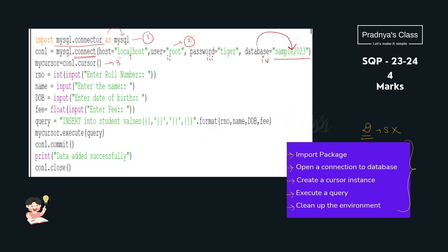Moving to the third step — we need to create a cursor instance using the cursor function. According to the question, all the fields need to be taken as input from the user, so we use the input function. Roll number is converted to integer and fees to float. Now the fourth step is to execute a query. For that, we first write the query. Since we need to insert a record, we use the INSERT INTO query. INSERT INTO the table name 'student', then the VALUES keyword. We use the format function with placeholders to provide the user-input values. String values like name and date of birth must be enclosed in single quotes within the placeholder.